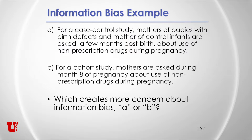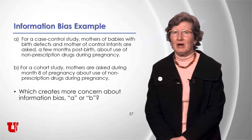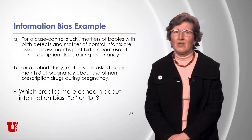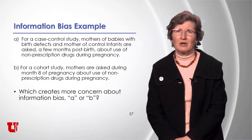Here's a classic example. In a case-control study (A), mothers of babies with birth defects and mothers of control infants are asked a few months post-birth about use of non-prescription drugs during pregnancy. In a cohort study (B), mothers are asked during month 8 of pregnancy about use of non-prescription drugs during pregnancy. Which creates more concern for information bias — A or B?